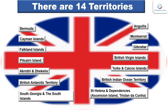There are 14 UK Overseas Territories in total and are as follows: Anguilla, Montserrat, Bermuda, Pitcairn Island, British Antarctic Territory, Akrotiri and Dhekelia, British Indian Ocean Territory, St Helena and Dependencies, Ascension Island, Tristan da Cunha, Cayman Islands, South Georgia and the South Sandwich Islands, Falkland Islands, Turks and Caicos Islands, Gibraltar, and British Virgin Islands.